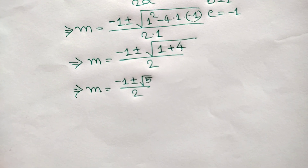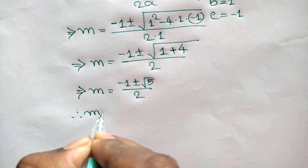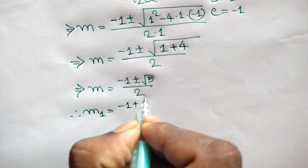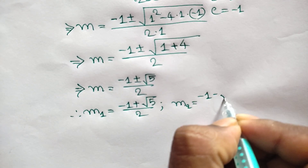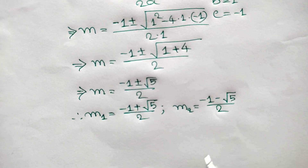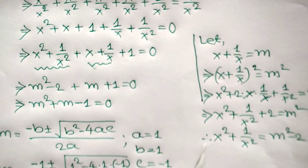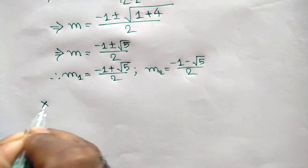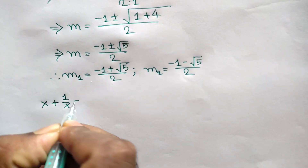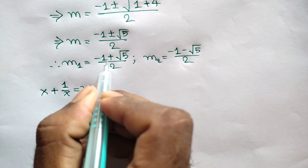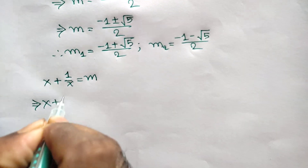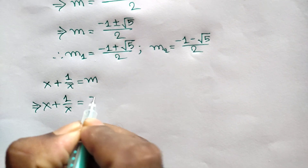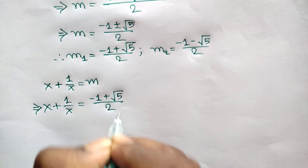There are two values of m: m₁ equals minus 1 plus square root of 5 over 2, and m₂ equals minus 1 minus square root of 5 over 2. Recalling that x plus 1 over x equals m, when m₁ equals minus 1 plus square root of 5 over 2, we write x plus 1 over x equals minus 1 plus square root of 5 over 2.